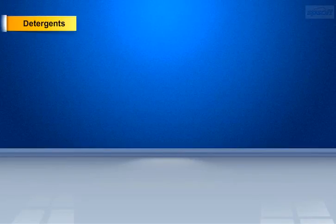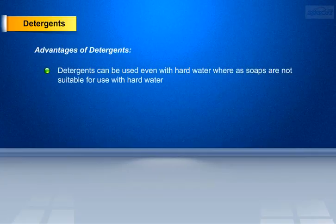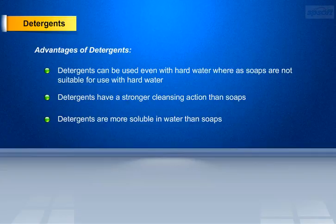Let us see the advantages and disadvantages of detergents. Advantages of detergents: Detergents can be used even with hard water, whereas soaps are not suitable for use with hard water. Detergents have a stronger cleansing action than soaps. Detergents are more soluble in water than soaps. Detergents can be used to clean woolen clothes.